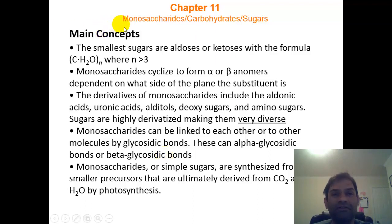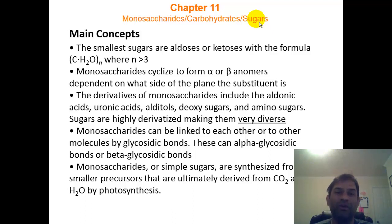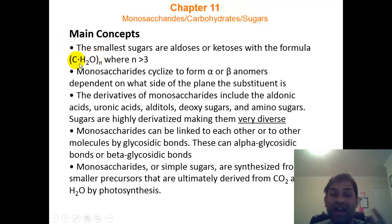Carbohydrates can be monosaccharides, such as simple glucose and fructose. They can be more complicated when they become polysaccharides, in which case the sugars have formed bonds with other sugars. We have disaccharides and polysaccharides, which are more than two sugars joined together. Carbohydrates generally have just carbon, hydrogen, and oxygen — this is what we call the empirical formula.